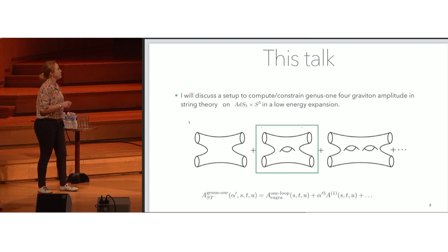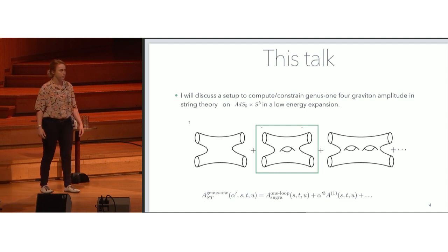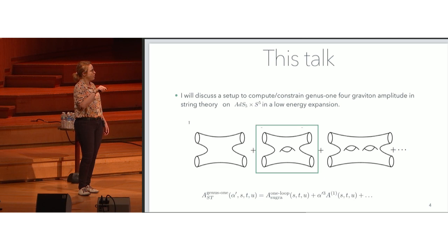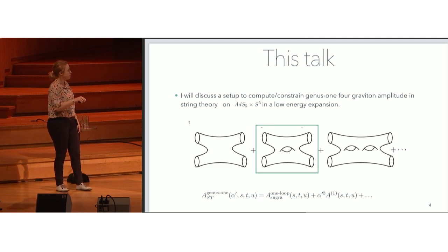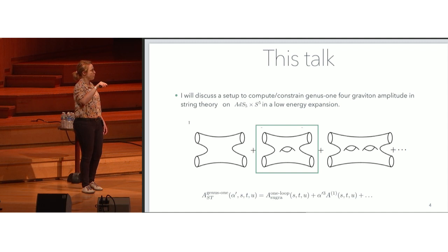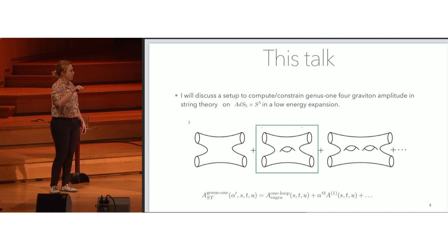So what is the talk about? My talk is about presenting a setup to compute and constrain genus-one graviton amplitudes in string theory on AdS5 × S5 in a low energy expansion. I made this plot: the first one is a genus-zero amplitude, this is the genus-one, and then higher genus. What I will be interested in is this object here in the box — a genus-one string amplitude, which is a function of the Mandelstam variables s, t, u and also of α'. When I say I study in a low energy expansion, I will take an expansion for small α', so the first term will be the supergravity one-loop term plus all the α' corrections.